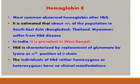In hemoglobin E, the point mutation is due to the replacement of the amino acid glutamate by lysine at the 26th position of the beta chain. Because of this point mutation, the glutamate present at the 26th position of the beta chain is replaced by lysine. Individuals with hemoglobin E can be either homozygous or heterozygous and do not show very serious clinical manifestations.